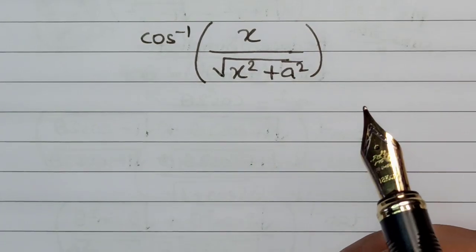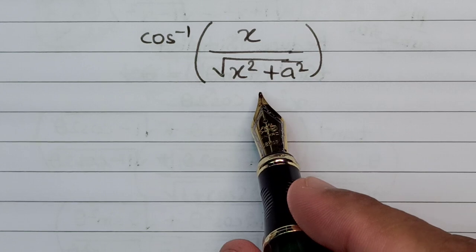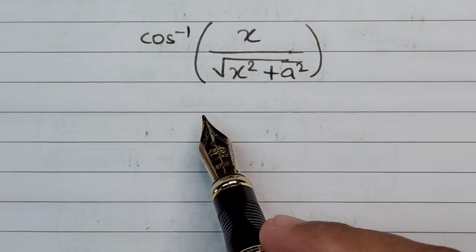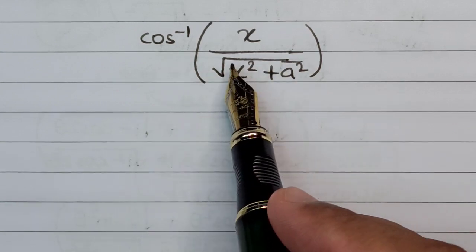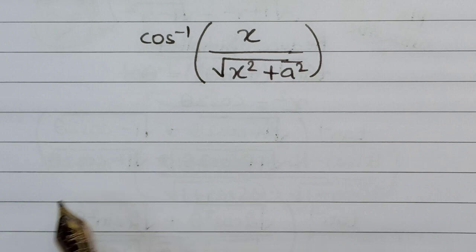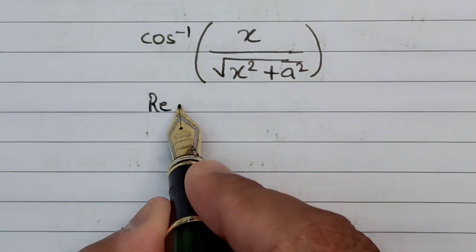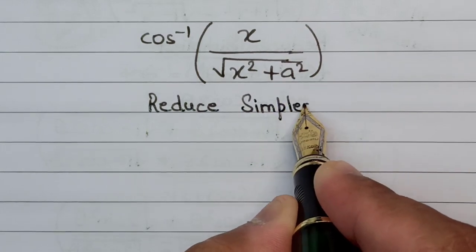Hello everyone, welcome to the YouTube channel. Today we are going to solve a really interesting maths problem from the inverse trigonometry section, which is cos⁻¹(x / √(x² + a²)), and the target at hand is to basically reduce this in the simplest form possible.